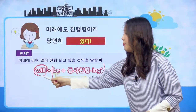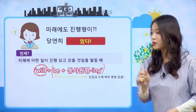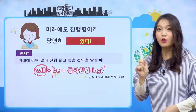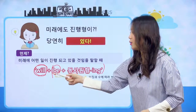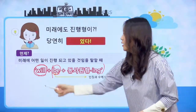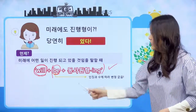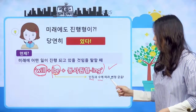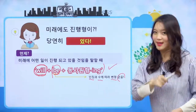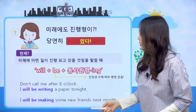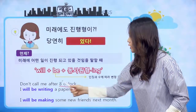언제 미래의 진행형을 사용하냐? 미래의 어떤 일이 진행되고 있을 것임을 말할 때, 이렇게 하고 있을 거야라는 식으로 말할 때 미래의 진행형을 쓰게 됩니다. 어떻게 만드냐면 be 동사에다가 동사 ing 하면 진행형이었죠. 현재 진행형은 am/is/are가 들어갔었고, 과거 진행형은 was/were가 들어갔어요. 그런데 미래의 진행형은 will을 씁니다. will이 맨 앞에 오고, will은 조동사였죠. 조동사 뒤에는 항상 동사 원형이 와야 된다고 했었죠. 그래서 be 동사를 있는 그대로 씁니다. 이거 be 동사 변형시키지 않아요.